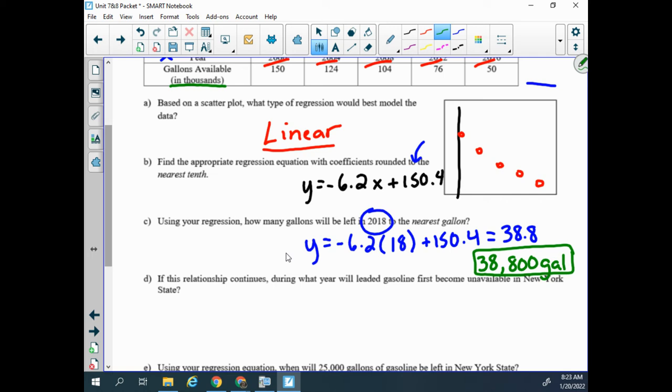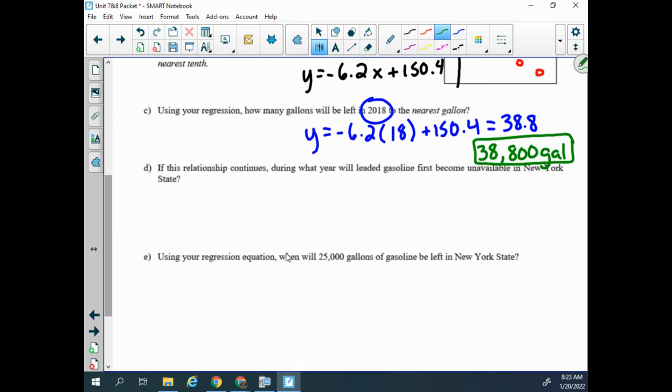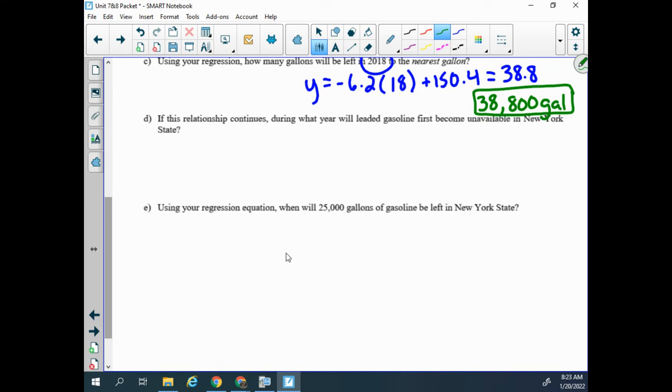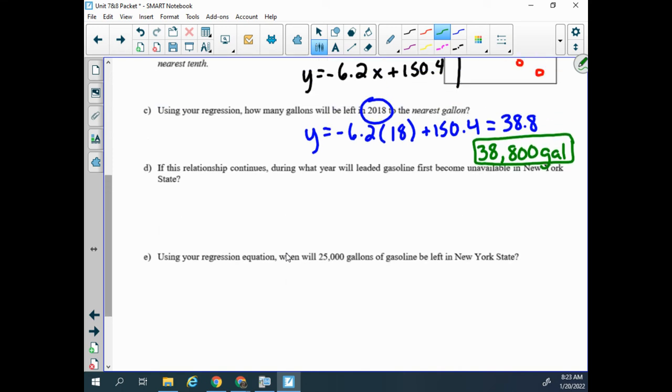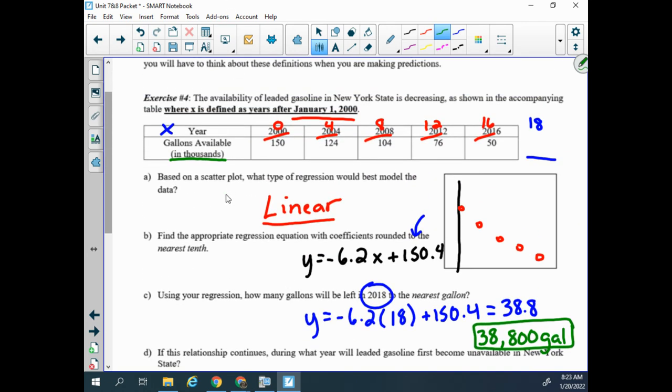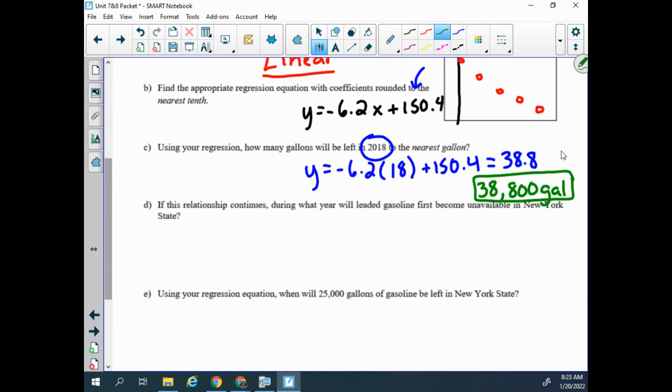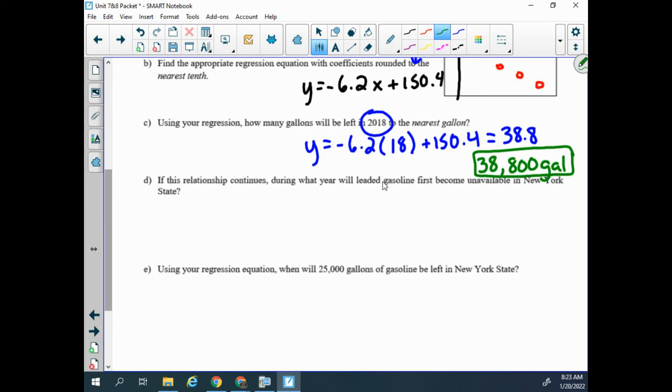Then it says if this relationship continues, during what year will the leaded gasoline first become unavailable in New York State. So we're saying on our table that the y value if it's not available would be 0. So I am plugging in 0 for y. Now this one we can solve algebraically because we know how to solve linear equations, so I'm plugging in 0 for y and solving for x.